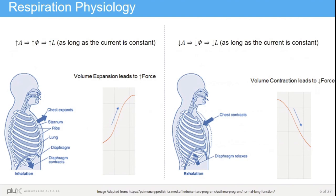During inhalation, on the left side of the screen, the diaphragm contracts, increasing lung volume, which decreases the pressure inside the lungs, leading to the entrance of air. During this, the chest expands, meaning that the cross-sectional area of the coil increases, leading to the increase of the other measures and thus also to the increase of the acquired signal.